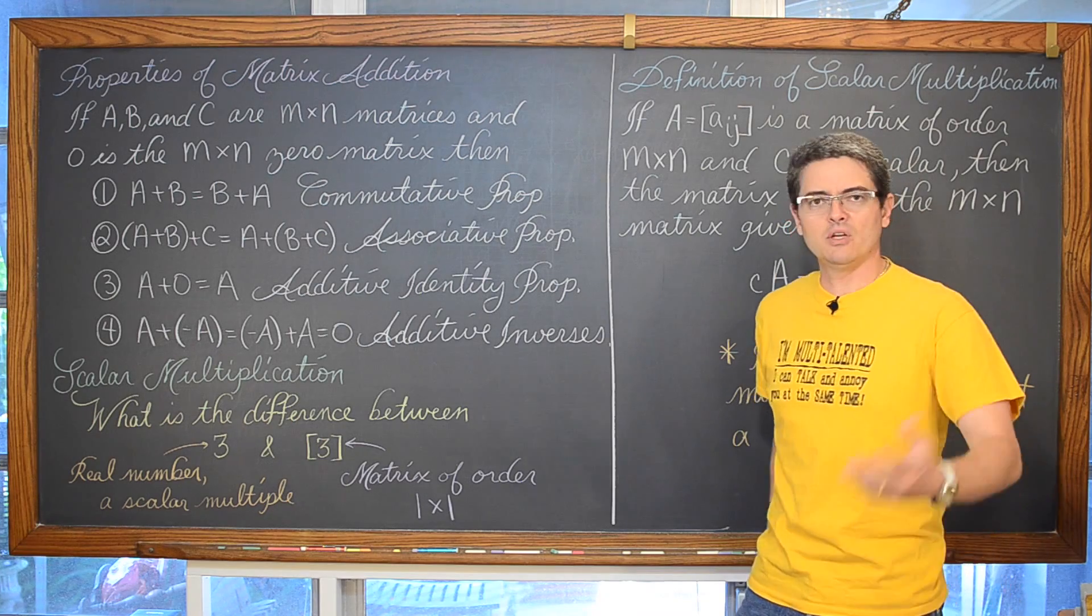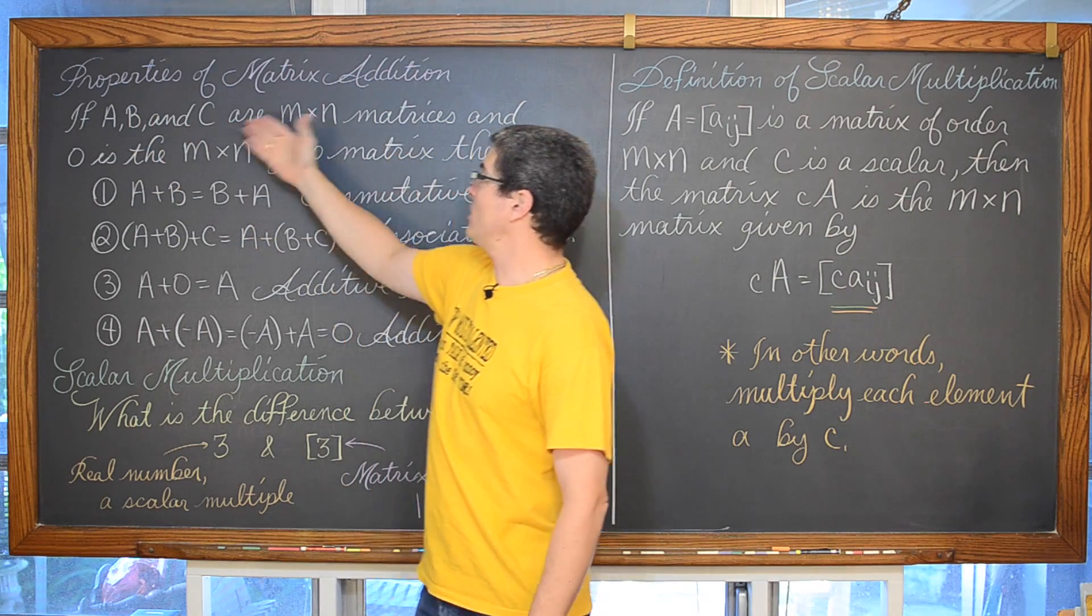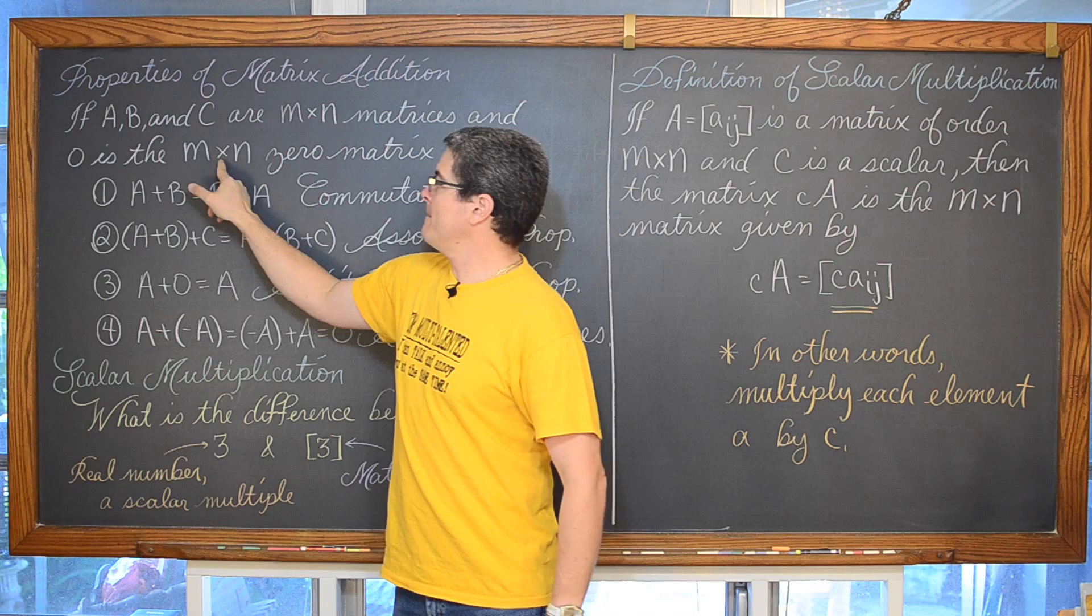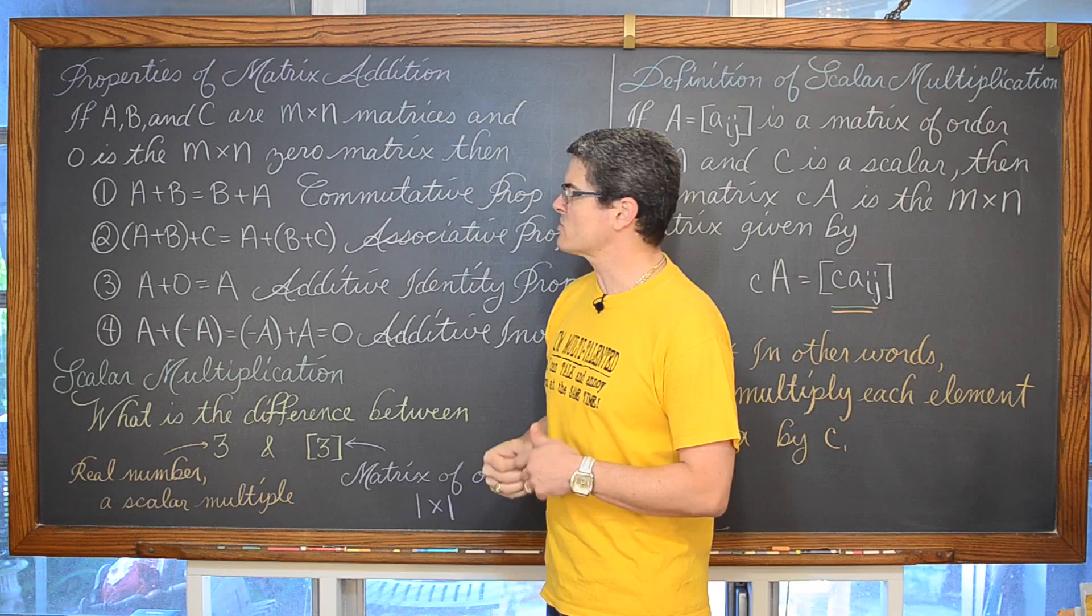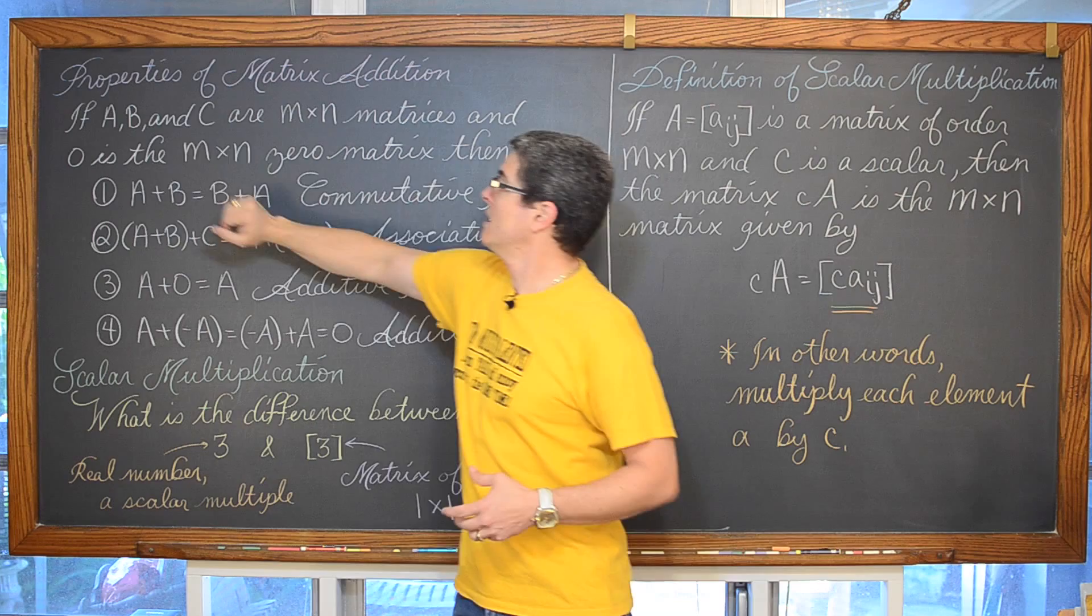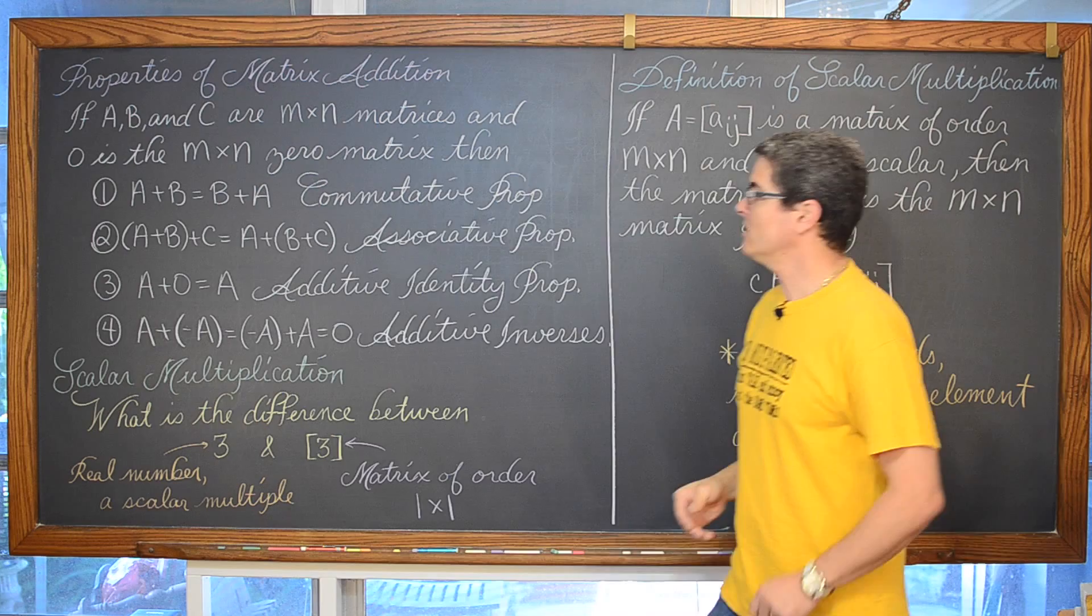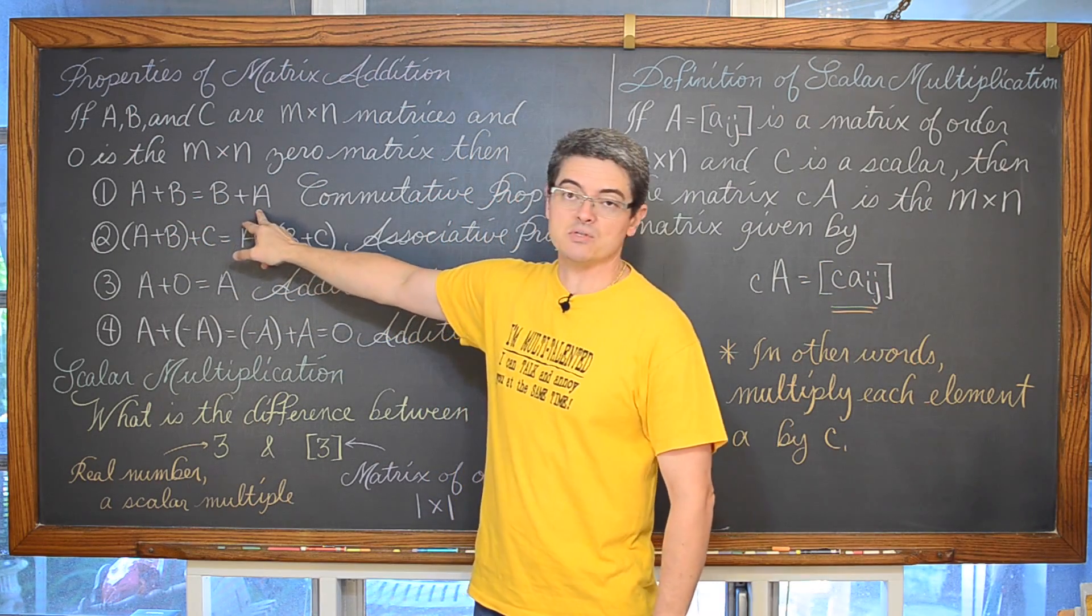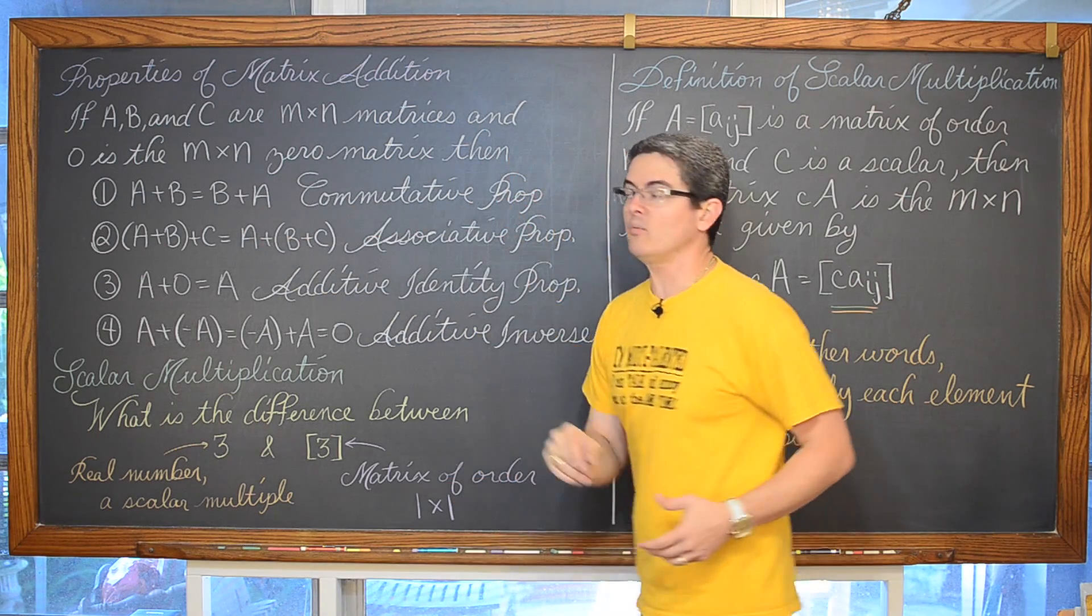Properties of matrix addition. If matrix A, B, and C, well if they are m by n matrices and zero is the m by n zero matrix. So even though we are talking about a zero matrix adding by zero and nothing sort of occurring, if you will, that zero matrix still needs to be the same size, the same order as whatever three matrices we are going to point out in these properties. Then we have A plus B, matrix A plus matrix B is equal to matrix B plus matrix A. Just like regular addition is commutative, we have that commutative property with matrices as well.